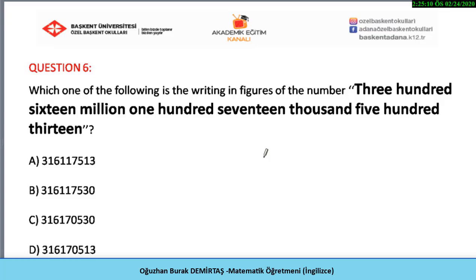Question six: which one of the following is the writing in figures of the number three hundred sixteen million, one hundred seventeen thousand, five hundred thirteen? Please stop the video to answer the question. Write the number and then compare your answer with the correct answer. The answer is A.